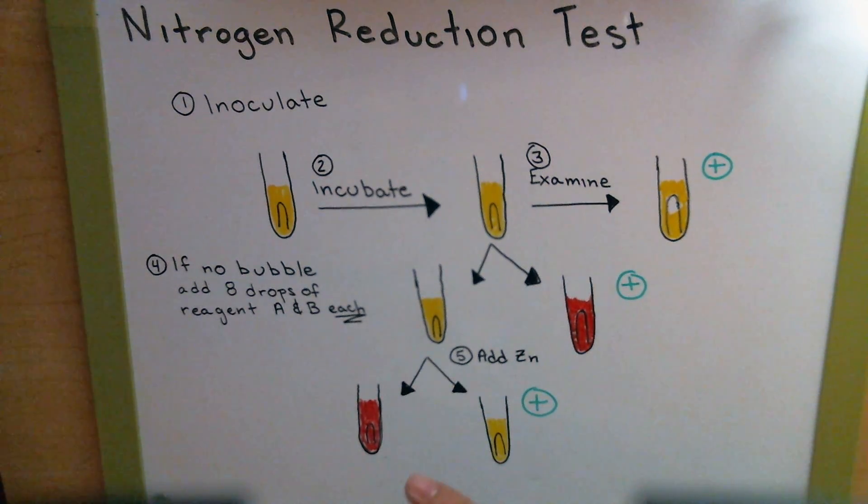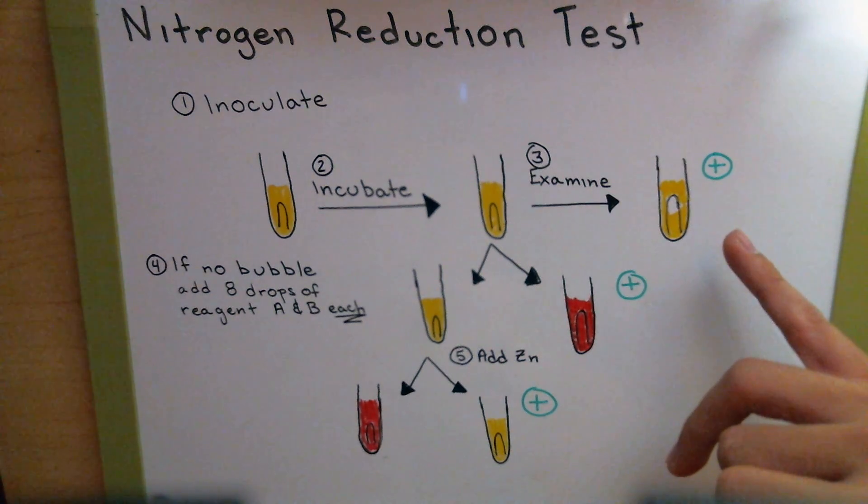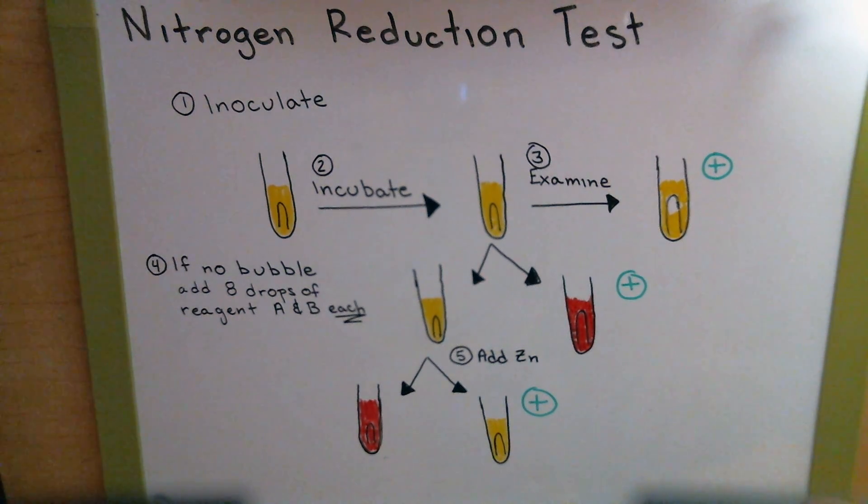However, if we get option number two, it will remain yellow, meaning that the nitrate was reduced to something else other than nitrite. And as you can see over here on the right side, we have our three positive results. So a yellow after step five, a red after step four, or a bubble here after step three, all mean positive results. All mean that nitrate was reduced in some way, shape, or form.